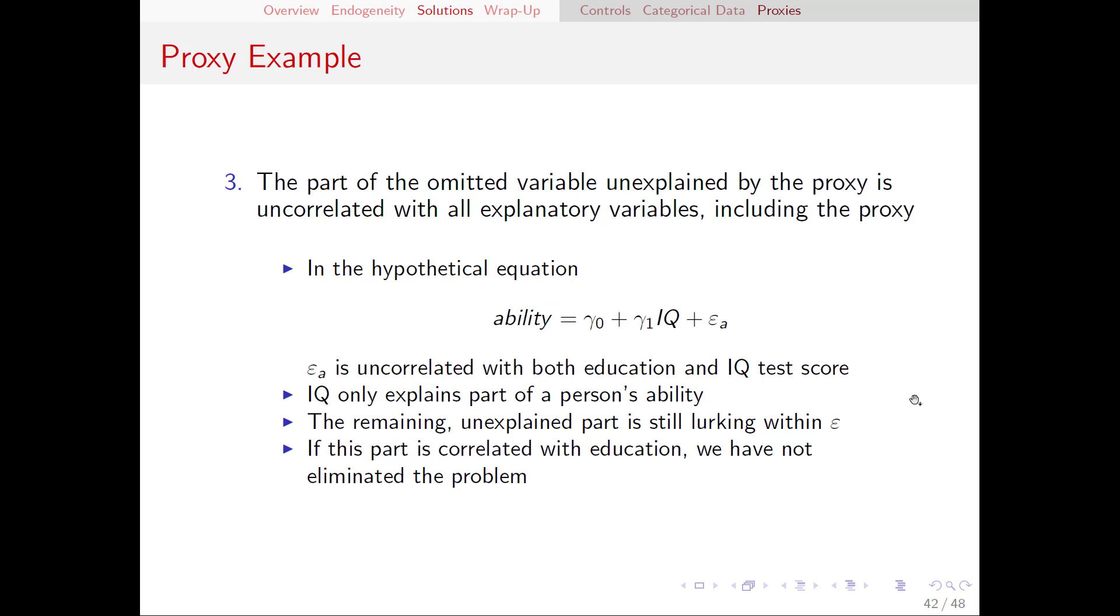Assumption number three is that the part of the omitted variable unexplained by the proxy is uncorrelated with all explanatory variables, including the proxy. This, I think, is the trickiest one of the bunch and requires the most explanation.